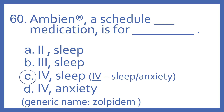And the answer is C. Ambien is a Schedule 4 medication for sleep. Remember, Schedule 4 medications generally include the sleep and anxiety medications. And the generic name for Ambien is Zolpidem.